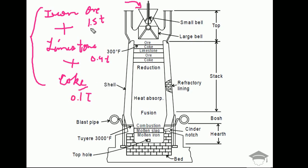These raw materials are fed through a small bell and a large bell. In the large bell we feed iron ore and limestone, and in the small bell we feed coke. All three materials then come into the furnace.